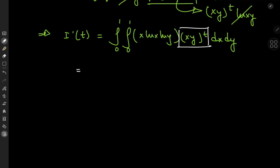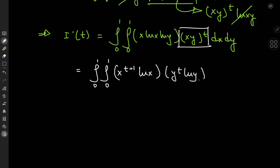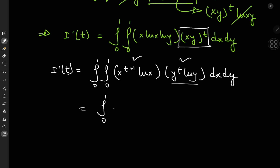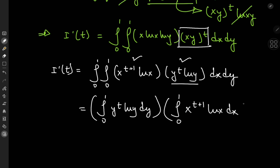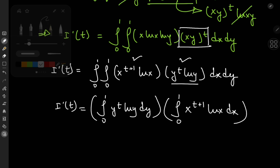Expanding the exponent and multiplying out the terms, I have the double integral from 0 to 1 of x^(t+1) times log x times y^t times log y, dx dy. The integrand is a function purely of x times a function purely of y, so we can treat it as a product of two ordinary integrals — one over x and the other over y. Taking the y terms outside the first integration gives the integral from 0 to 1 of y^t log y dy, times the integral from 0 to 1 of x^(t+1) log x dx.